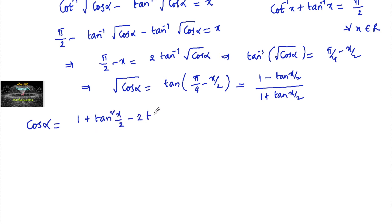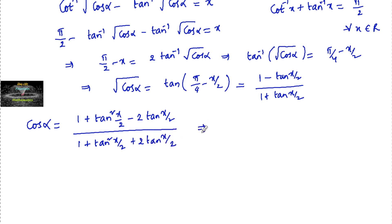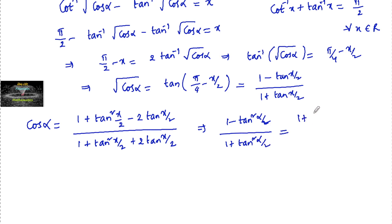We can also write cos α using the half-angle formula as (1 minus tan²(x/2)) divided by (1 plus tan²(x/2)). So we now have two expressions for cos α: one from squaring and one from the half-angle identity.